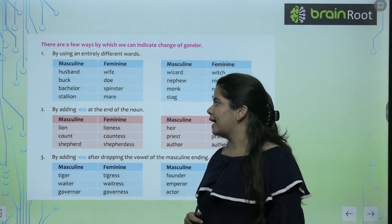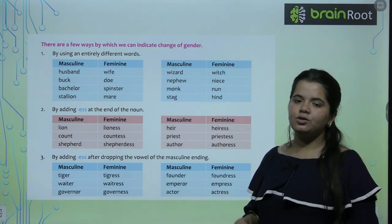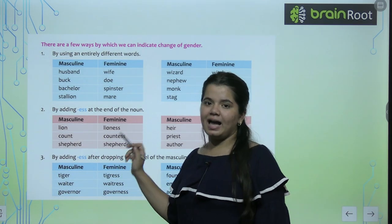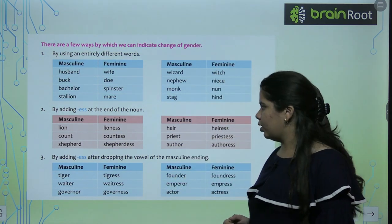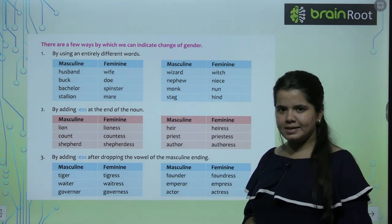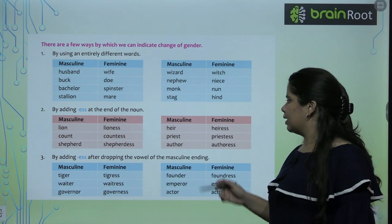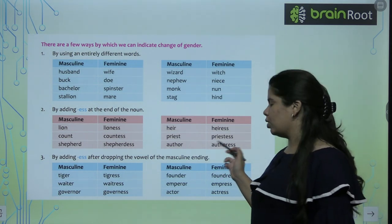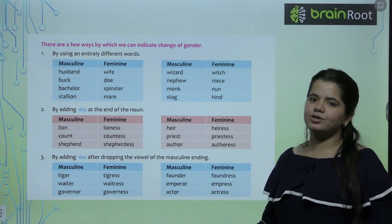Second way: by adding -ess. Ab kuch mein hum kya karte hai — hum -ess agar add karte hai toh feminine noun ban jata hai. Jaise: lion hai — iska lioness kaisi bana? Hum ne end ke baad -ess ko add kar diya. Count, countess. Shepherd, shepherdess. Heir, heiress. Priest, priestess. Author, authoress. In words mein hum ne -ess ko add kar diya.